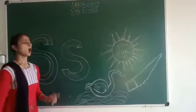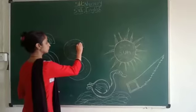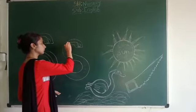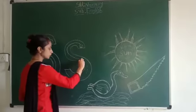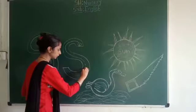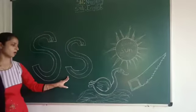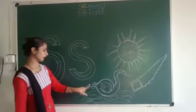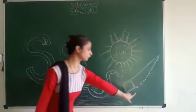Now how to write baby S for sun? Join the door, make it a half cup, then go down slowly, make it again a half cup. This is called baby S for sun. Baby S for sun. Baby S for so.